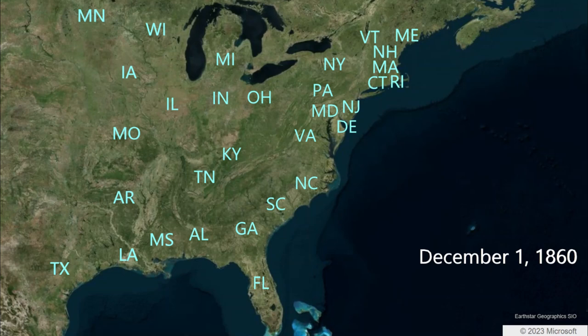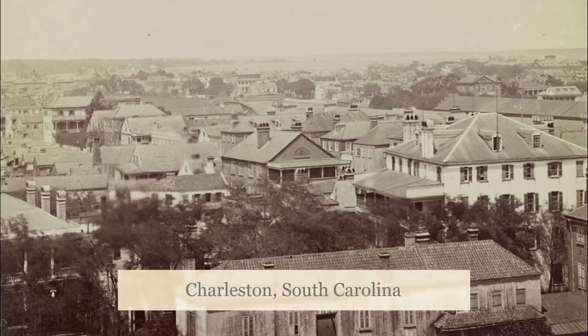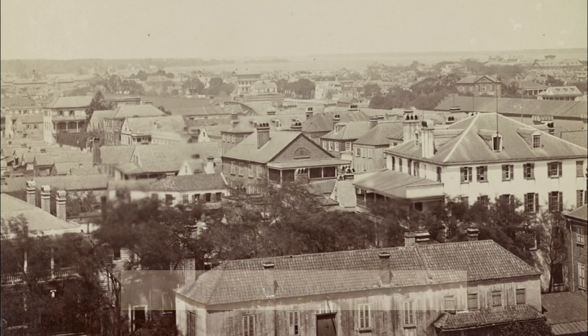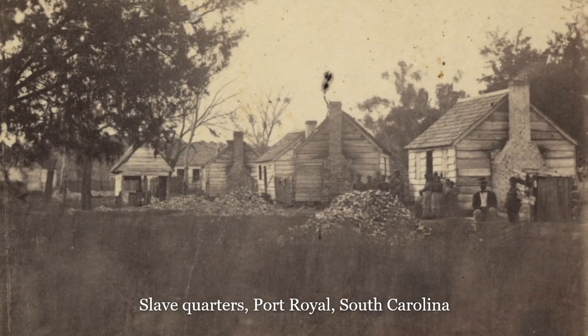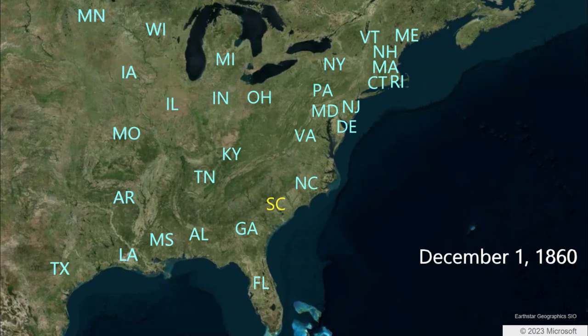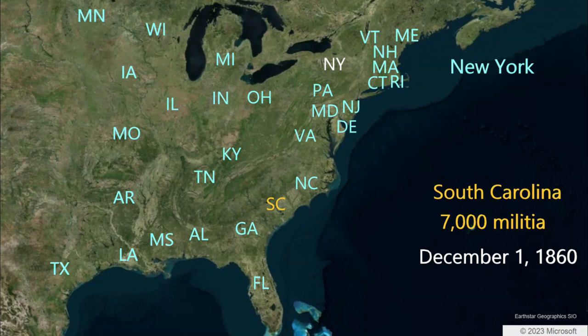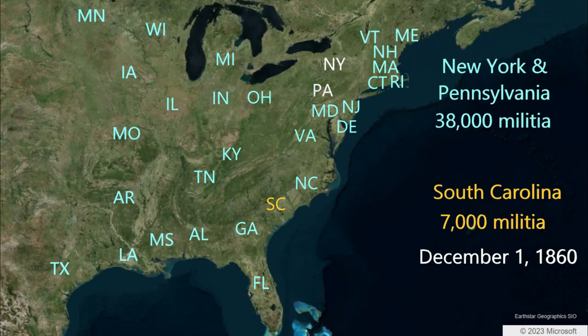In December 1860, the eyes of the nation turned toward South Carolina. The previous month, at Columbia, South Carolina, legislatures had authorized a convention for secession. Secession talk is the most impassioned and enthusiastic in South Carolina, and was in motion immediately following Abraham Lincoln's election in November. However, there is a serious numbers problem for South Carolina. South Carolina has those 7,000 active militia, but New York's state alone has almost tripled that figure with 19,000 men. New York and Pennsylvania together have some 38,000 — over five times the militia ready.